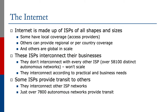The internet is made up of networks and network operators of all shapes and sizes. Some have local coverage and they're generally access providers. Others can provide regional or per-country coverage, and other operators are global in scale. These network operators interconnect their businesses. You don't interconnect with every other ISP — there are over 58,000 distinct autonomous networks at the time we made this recording, and that just won't scale.